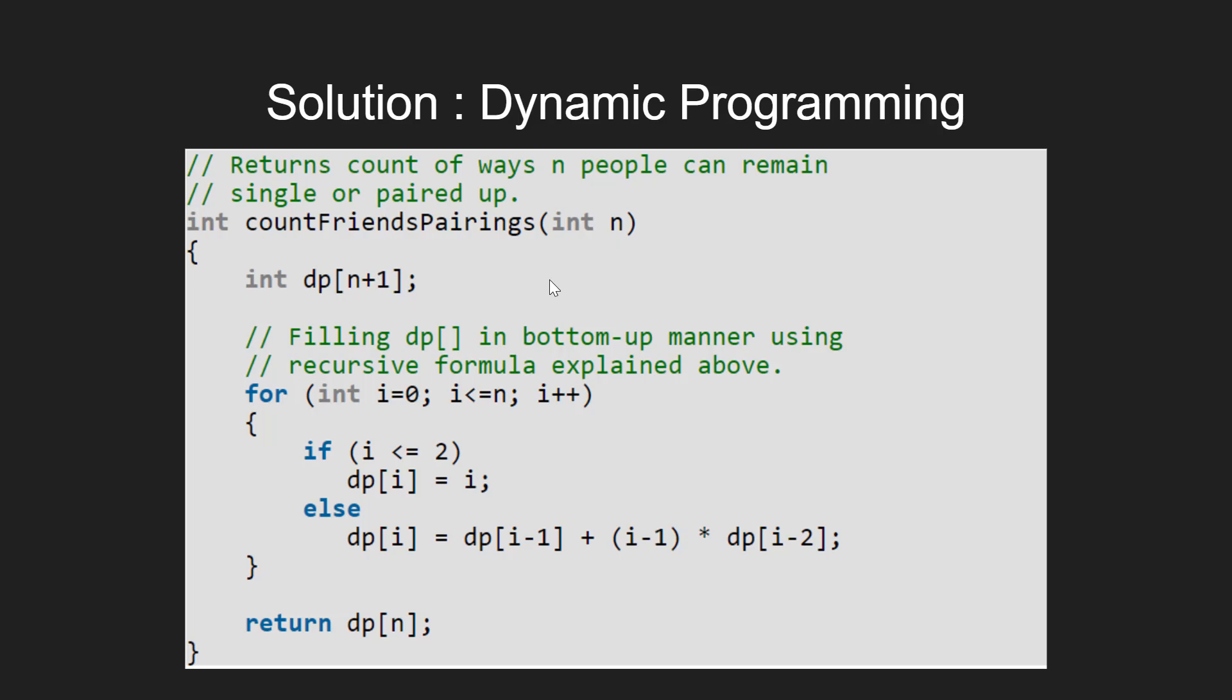First, we initialize an integer array dp with size n+1. The i-th index stores the number of ways i friends can arrange themselves.